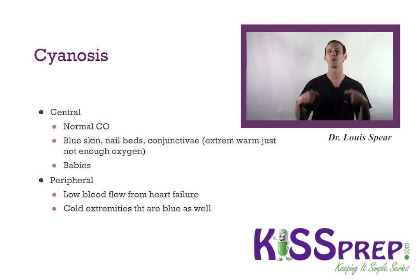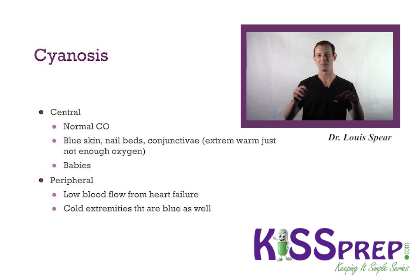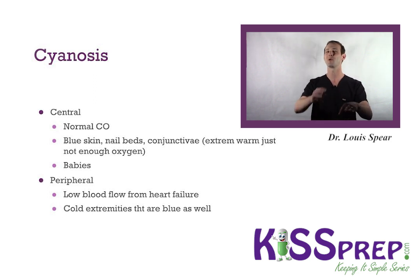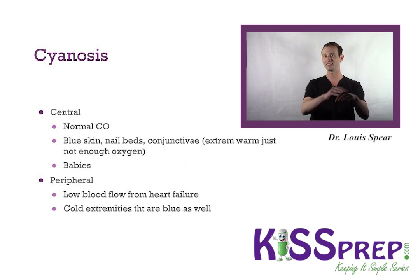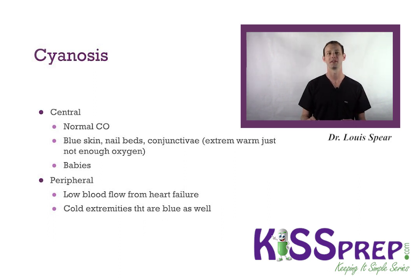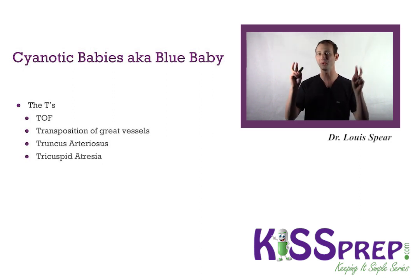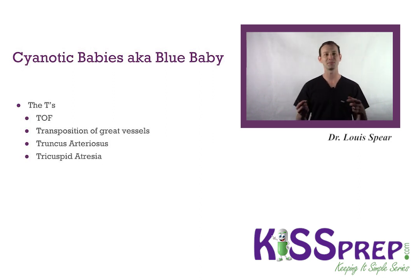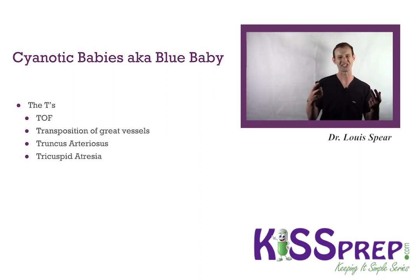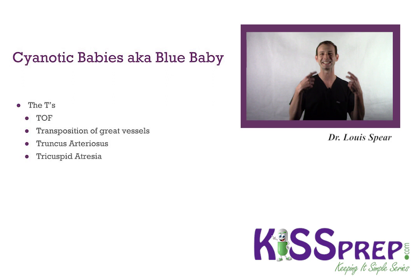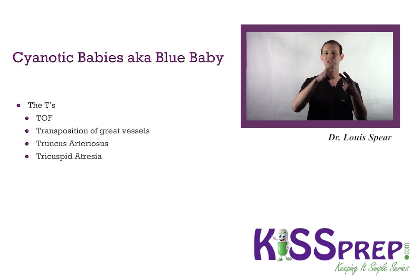Peripheral cyanosis is low blood flow, poor blood flow from the heart, poor vasculature in your extremities — when you feel the extremity it will be cold. With central cyanosis, the peripheral extremity will be warm. Cyanotic babies, aka 'blue babies' — you must recognize what causes this. These are the T's: Tetralogy of Fallot, Transposition of the Great Vessels, Truncus Arteriosus, and Tricuspid Atresia.